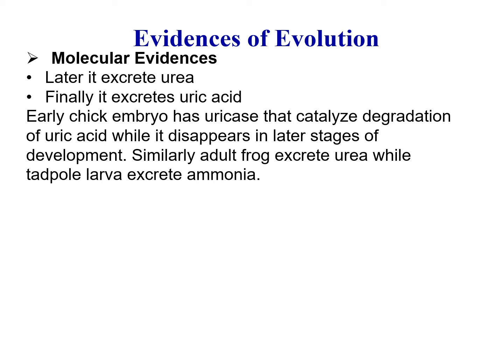Early chick embryos have urease that catalyzes the degradation of uric acid, but this enzyme is lost as development proceeds, so the adult chick excretes uric acid. Similarly, adult frogs excrete urea while tadpole larvae excrete ammonia — at the larval stage ammonia is excreted, but as the frog matures it begins excreting urea.